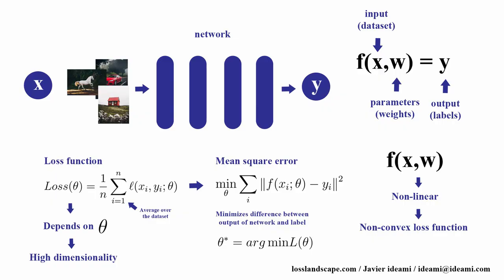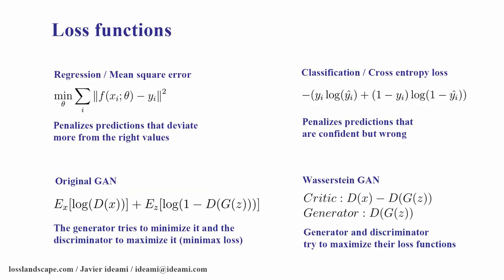I'm now going to give you quickly the context to understand how these visualizations are produced. We have neural networks — for example, convolutional networks classifying images — with inputs, outputs, and in the layers of the network, we have millions and billions of weights and parameters. These functions mapping inputs to outputs depend on the dataset and these parameters. If we want to change these parameters with backpropagation and gradient descent so we gradually improve network performance, we first need to measure performance with a function we call the loss function. That loss function depends on the parameters of the network, and we have millions or billions of parameters — so these are very high-dimensional functions.